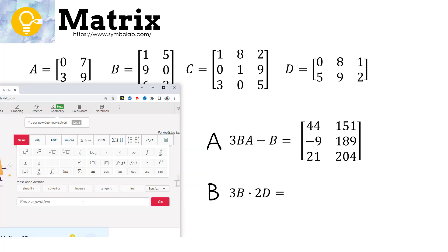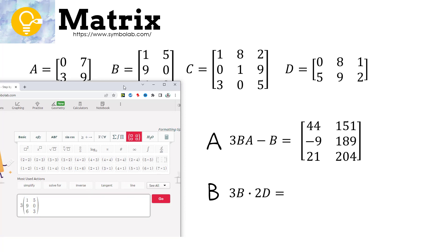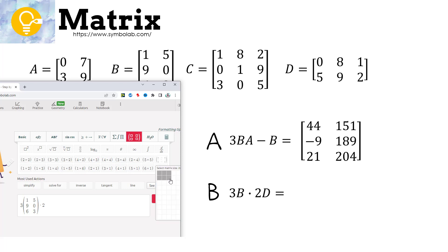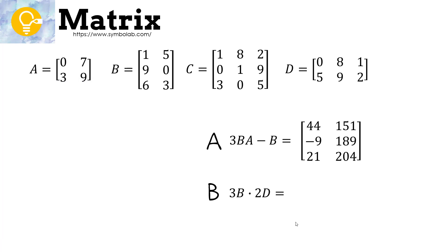For the next one, pause the video and try it using Symbolab. We enter scalar 3 times matrix B (2 by 3), then multiply by scalar 2 times matrix C (3 by 2), and press go. The answer is: 150, 318, 66, 0, 432, 54, 90, 450, and 72.